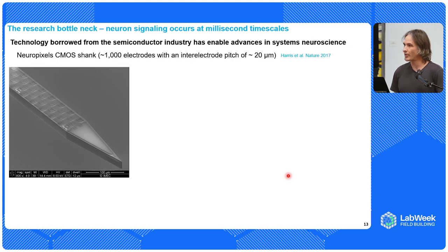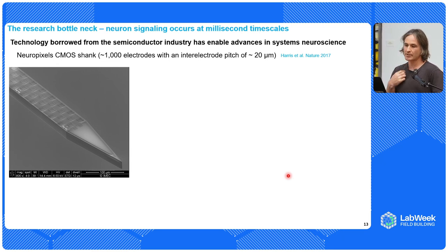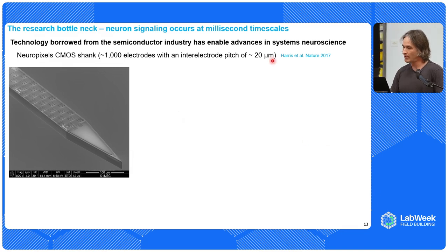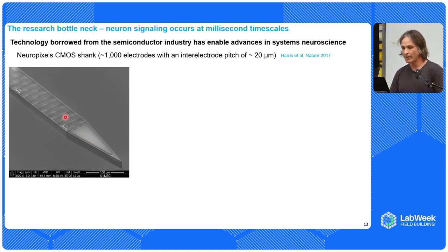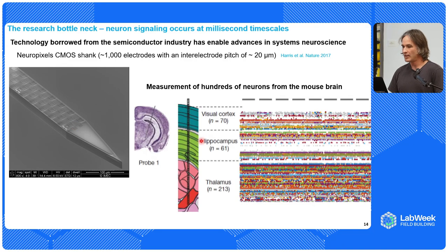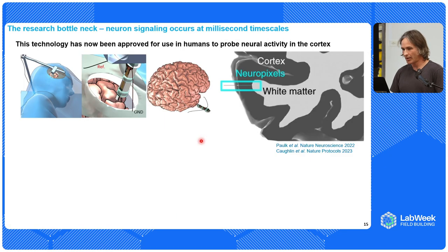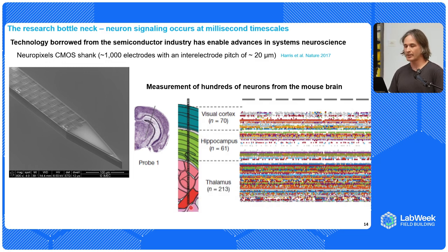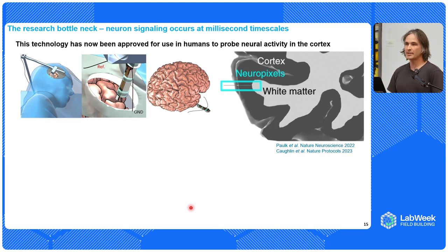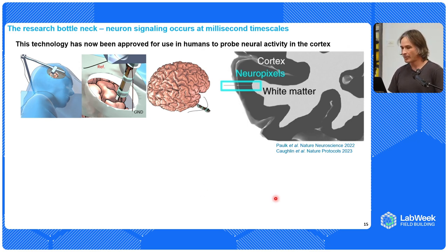Technology borrowed from the semiconducting industry has enabled major advances in systems neuroscience. Here is the Neuropixels probe — the first paper came out in 2017, a collaboration at Janelia and IMEC in Belgium. Here you have roughly a thousand sensors integrated on a silicon shank. Their inter-electrode pitch is roughly that of a soma, around 20 microns. These measurements allow the community to capture hundreds of neurons across the mouse brain, though one major limitation is its very narrow cross-sectional footprint. This technology has now been approved for use in humans to probe neural activity within the cortex.